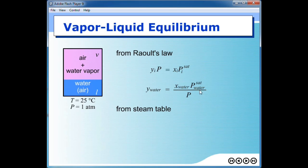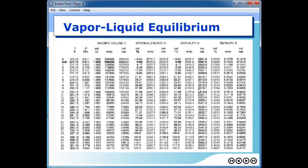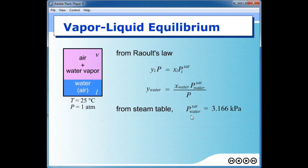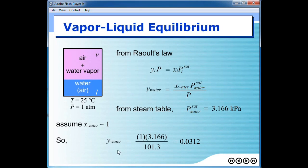For water vapor pressure, it can be found either by using the Antoine equation or simply using the steam table. If we look up the steam table at 25 degrees Celsius, we find the vapor pressure to be 3.16 kPa. The mole fraction of water in the liquid phase can be assumed to be very close to 1, because the amount of air dissolved into water is very, very small. So if we approximate the mole fraction of water in liquid as 1 and plug into Raoult's law, we can solve for the mole fraction of water in vapor to be about 0.03.